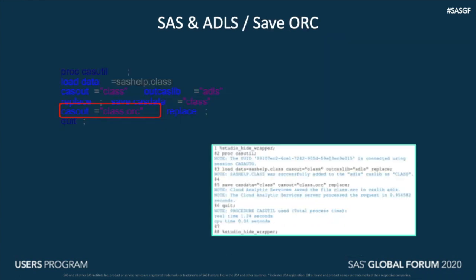Let's look at an example to save data to ADLS from SAS. Here we are saving the data to Azure Data Lake Storage in ORC, which is the optimized row columnar format, using the SAS ORC engine. We are utilizing PROC CASUtil to do this. Going from the top of the code, we are loading a SAS data set to the in-memory cluster first, then saving the in-memory table to ADLS in ORC format.